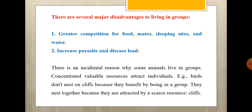Concentrated valuable resources attract individuals to be grouped together. For example, birds don't nest on cliffs because they benefit by being in a group — they nest together because they are attracted by a scarce resource: the cliff.